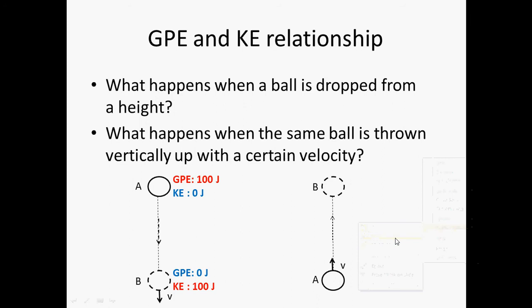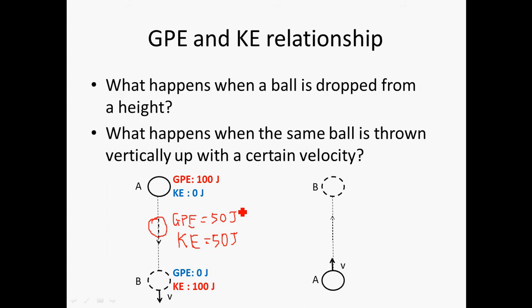If we consider a point halfway down, half the energy is converted, so GPE equals 50 joules and KE equals 50 joules. In all three cases — top, middle, and bottom — the total energy remains 100 joules. So energy is conserved; it is just transferred from one form to another as it falls from GPE to KE.